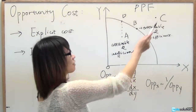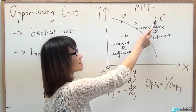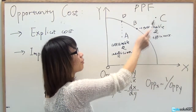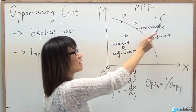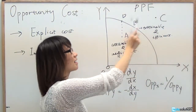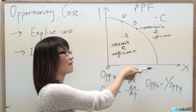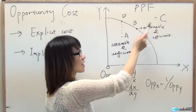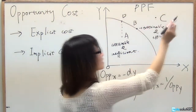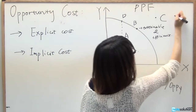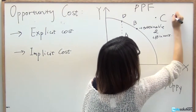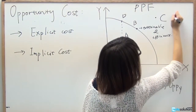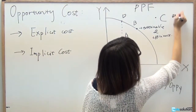The last area is point C. Point C is outside the PPF line, which means we do not have the resources to reach point C. Therefore, point C is unattainable.